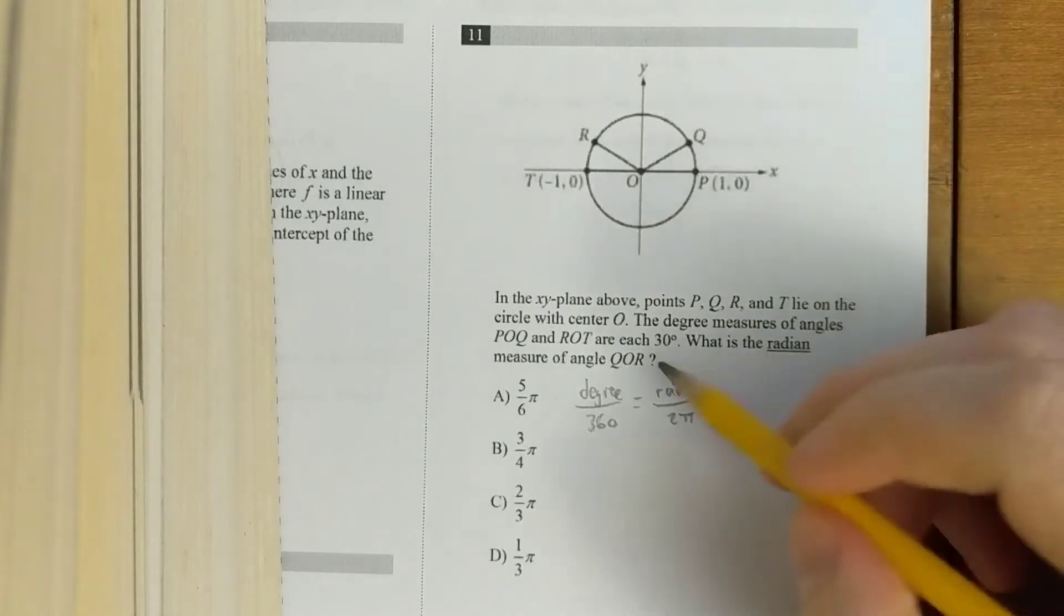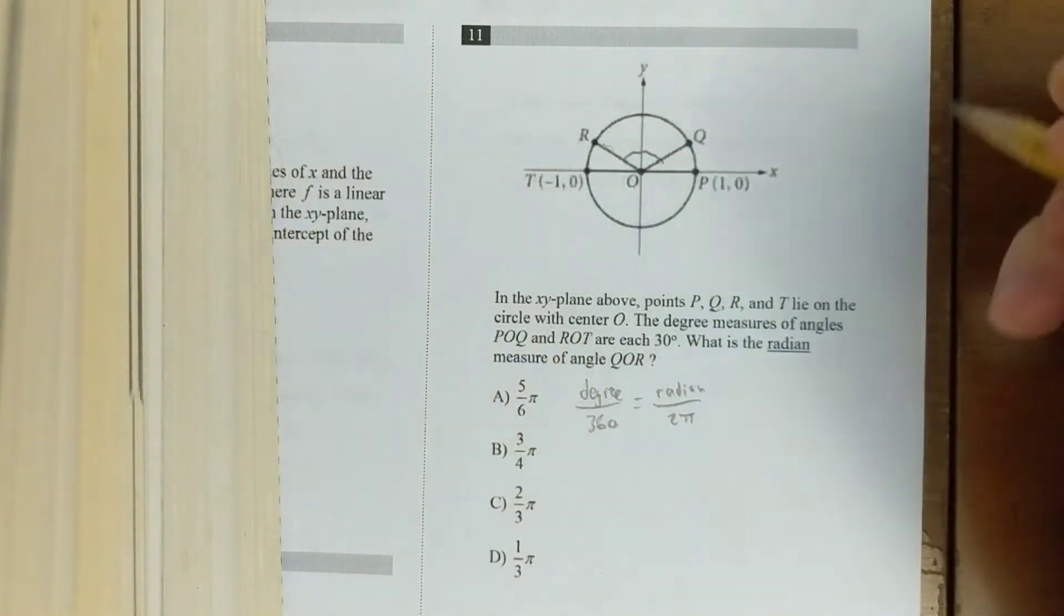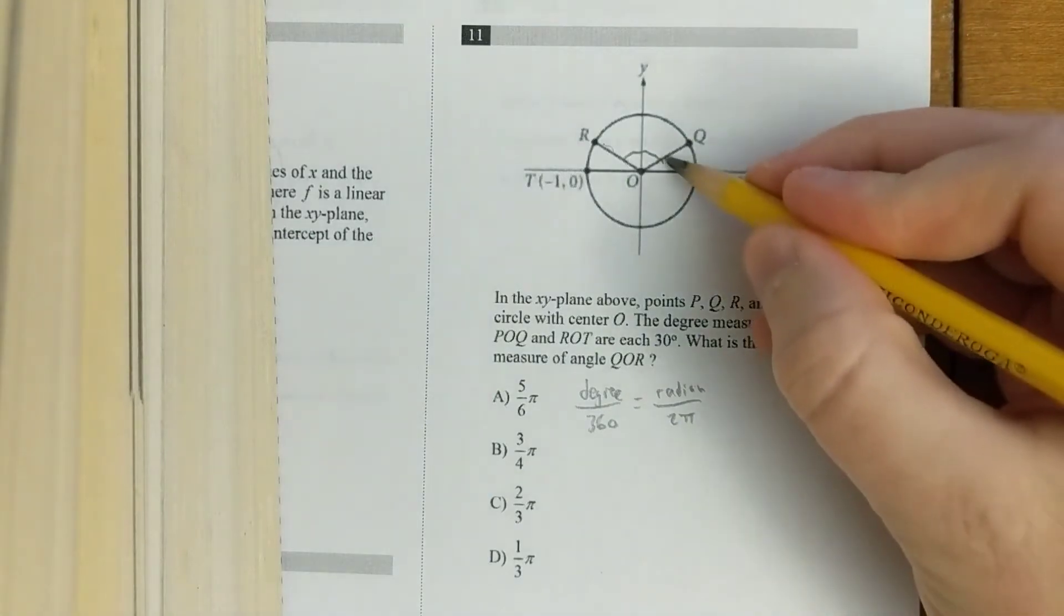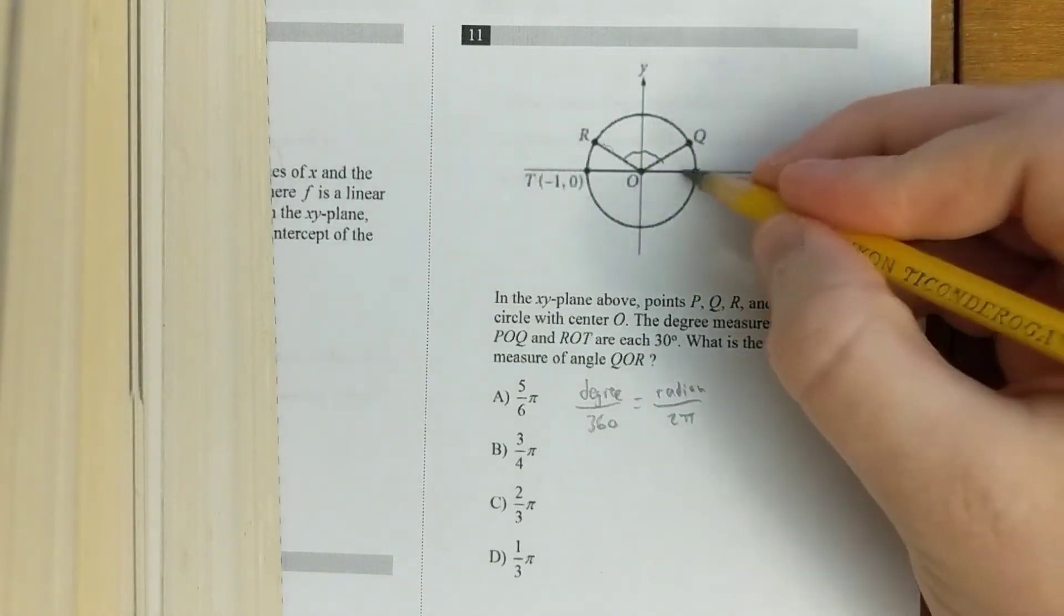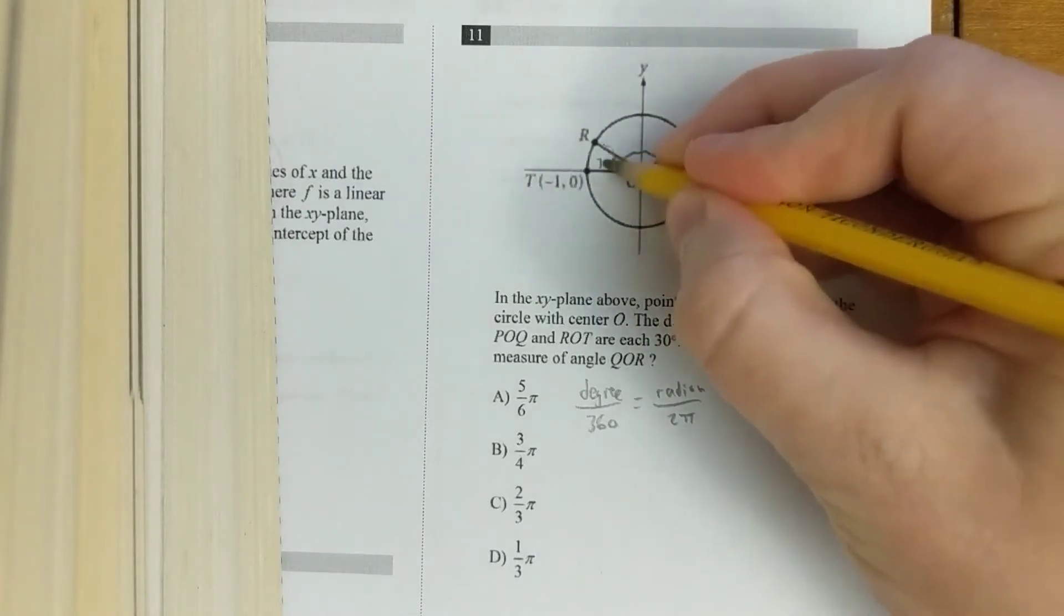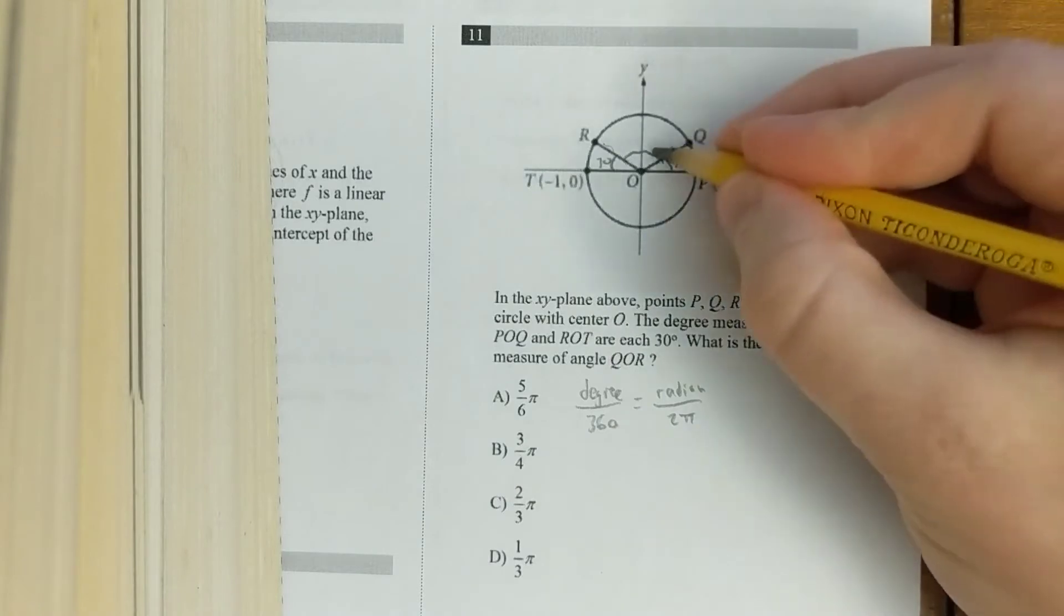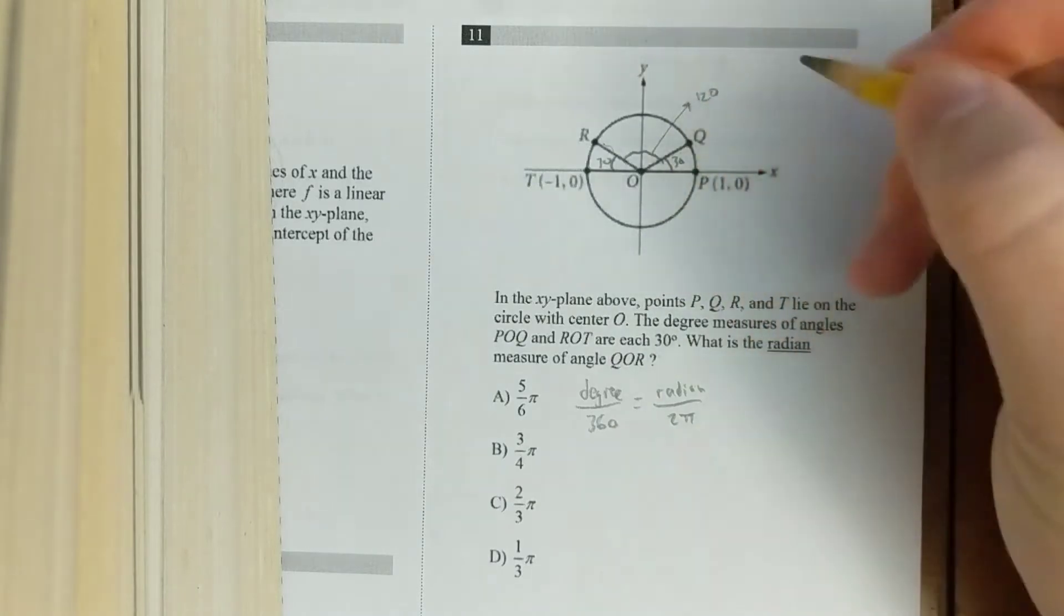This one is asking for the radian measure of angle QOR, so this one. And they tell us these two angles, but they're in degrees. So POQ is 30 degrees, ROT is also 30 degrees. We know, since this is a straight line, that it has to come out to 180. So that means that the angle we're looking for is 120 degrees.